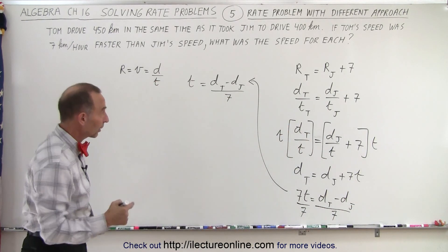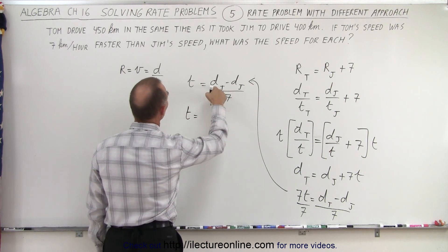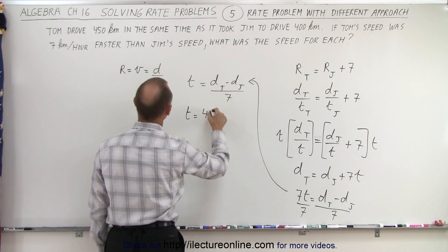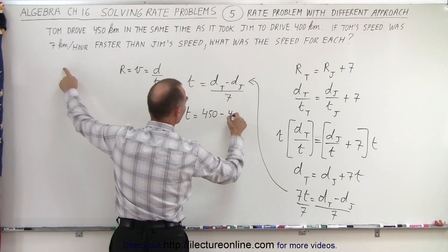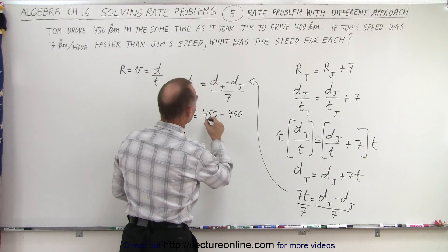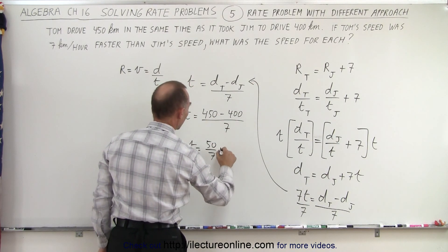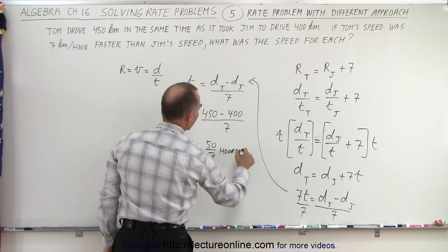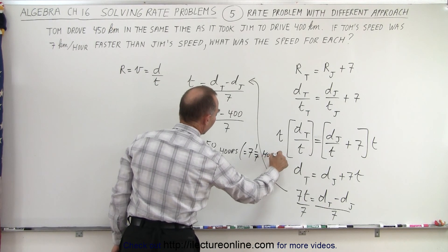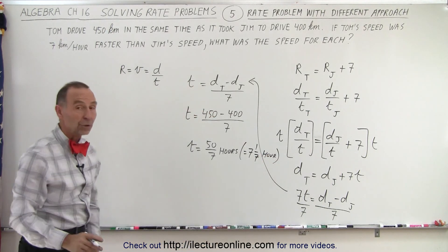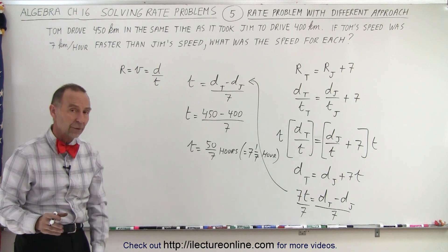Now we just have to plug in what those distances are. The time taken by both drivers is the distance by Tom, which is 450 kilometers, minus the distance by Jim, which is 400, divided by 7. So the time is equal to 50 divided by 7 hours, which is equal to 7 and 1/7 of an hour. Now we know that the time for both drivers to drive their respective distances took a little over 7 hours.